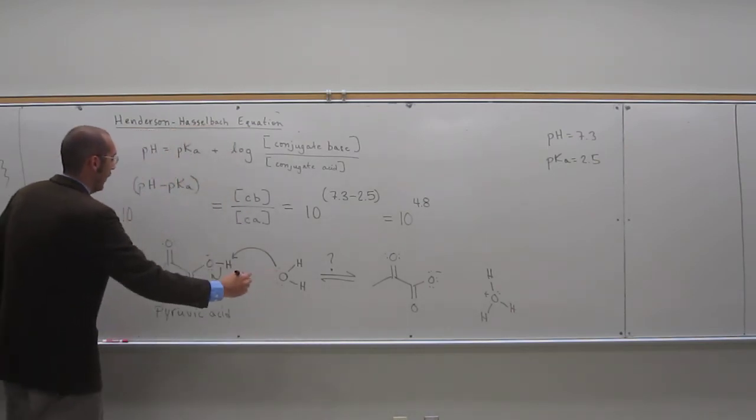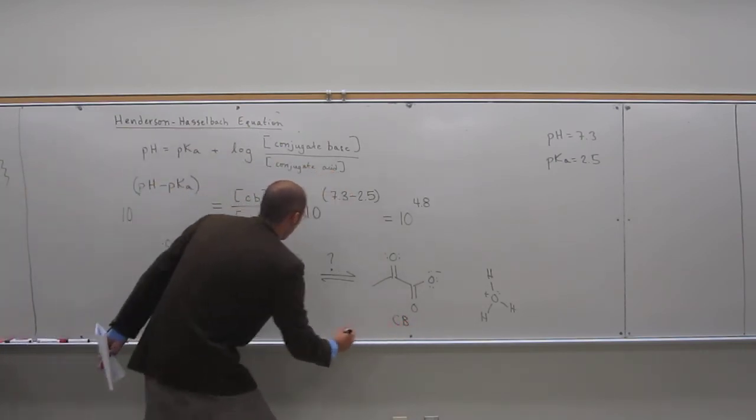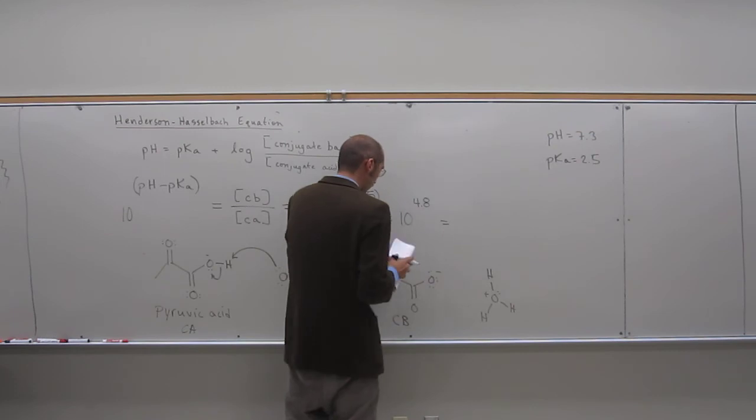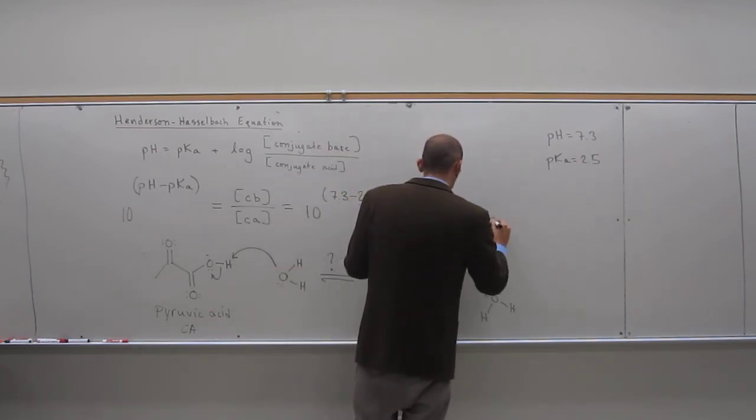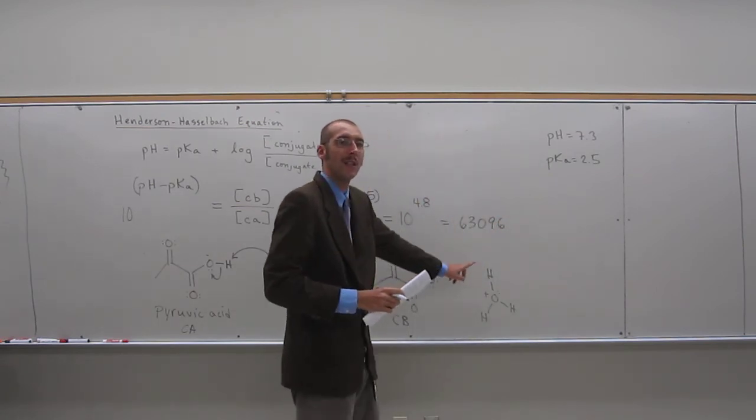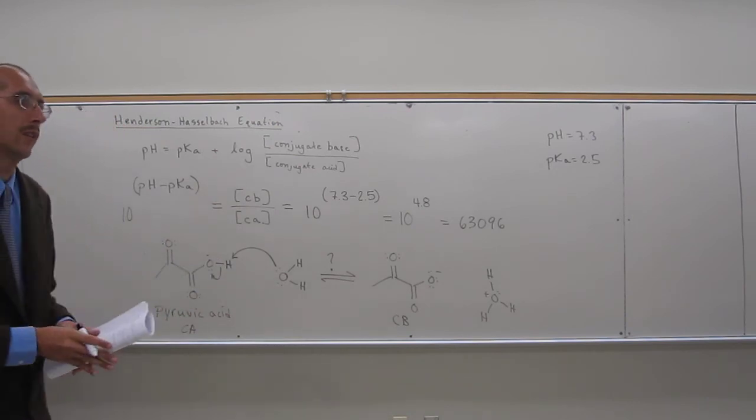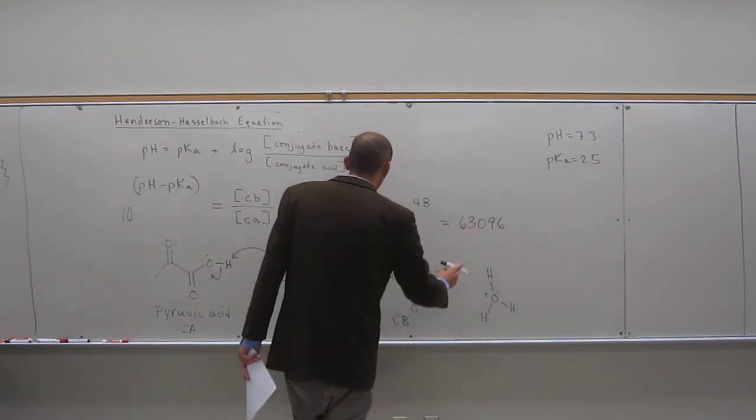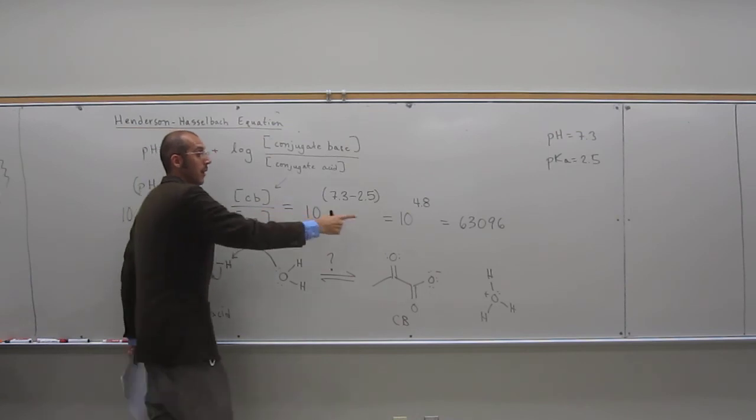So which one's the conjugate base? And which one's the conjugate acid? What's this one? Conjugate base. This one? Conjugate acid. So if we would expect, this actual number, I think I calculated it again, 6, 3, 0, 9, 6. And notice the units of all of these, none, okay? Equilibrium constants have no units, okay? So bigger than one or less than one? Bigger. So it's going to favor the conjugate base, because the conjugate base is on top.